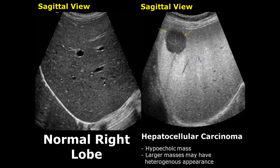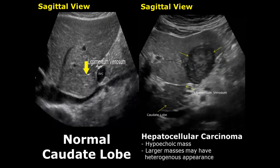A hepatocellular carcinoma is a malignant lesion of the liver. It has a hypoechoic appearance, and larger masses may have a heterogeneous appearance. We need to perform a CT scan for proper diagnosis. This mass is larger than the previous one and has somewhat of a heterogeneous appearance.